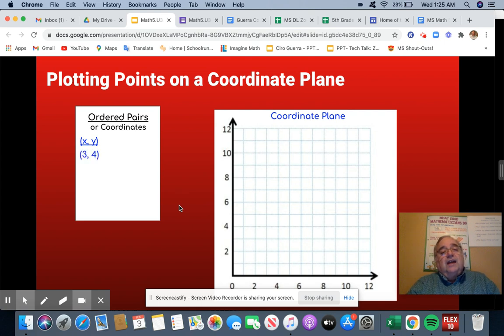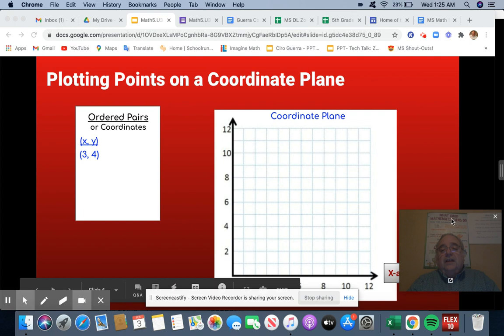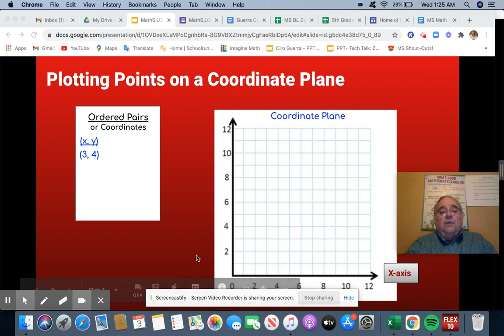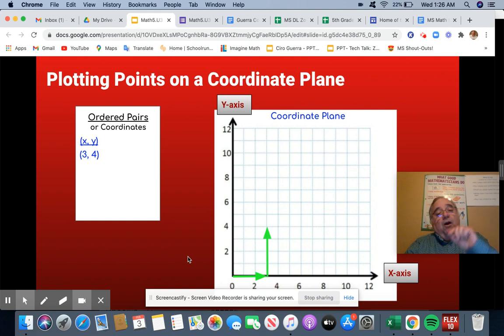First number we're going to plot is 3, 4. We're going to do it on the x-axis, right down here, and what we're going to do is start at the origin, go over 3, and then up 4 spaces on the y-axis. We're going to mark our point and label it (3, 4).